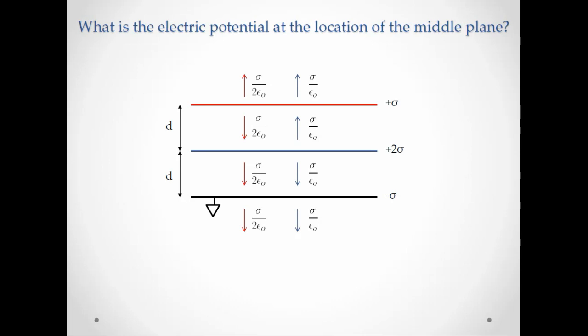If we look at the second plane, the directions are the same. Above the plane, it points up. Below the plane, it points down. But now it's going to be two sigma divided by two epsilon naught, which cancels to sigma over epsilon naught.